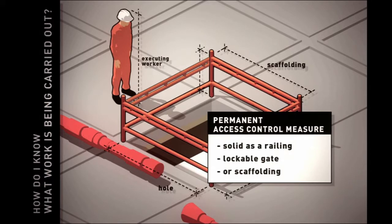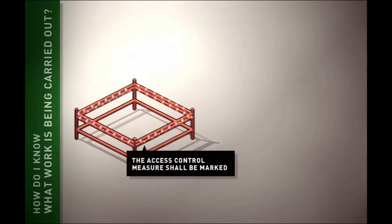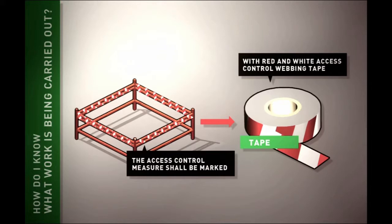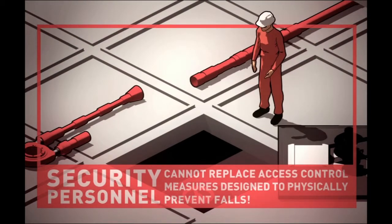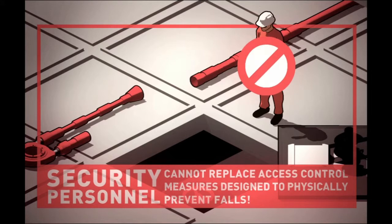For example, this might be a lockable gate or an access control measure installed using scaffolding materials. The access control measure must be marked with red and white access control webbing or tape. This should be wrapped around the railing. The presence of security personnel cannot replace access control measures that are designed to physically prevent falls.